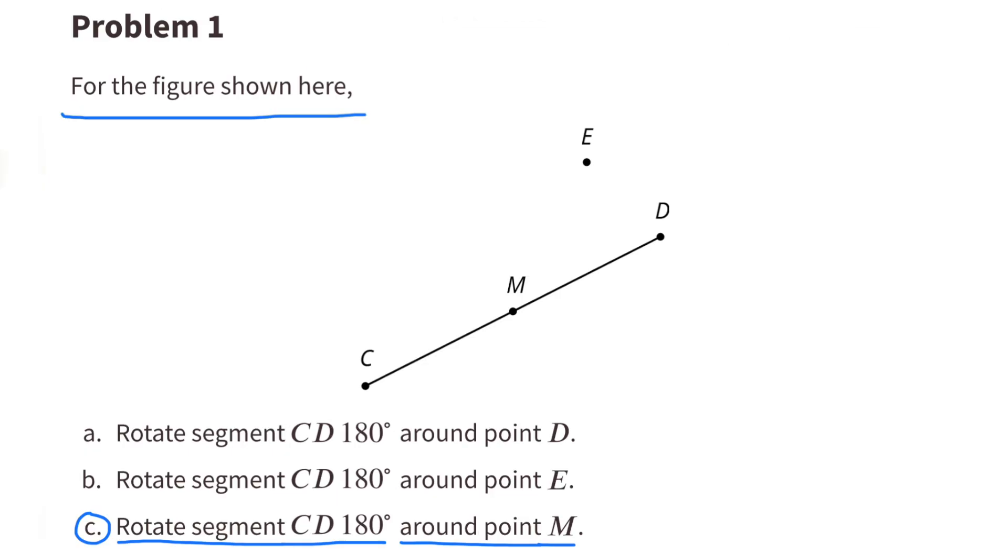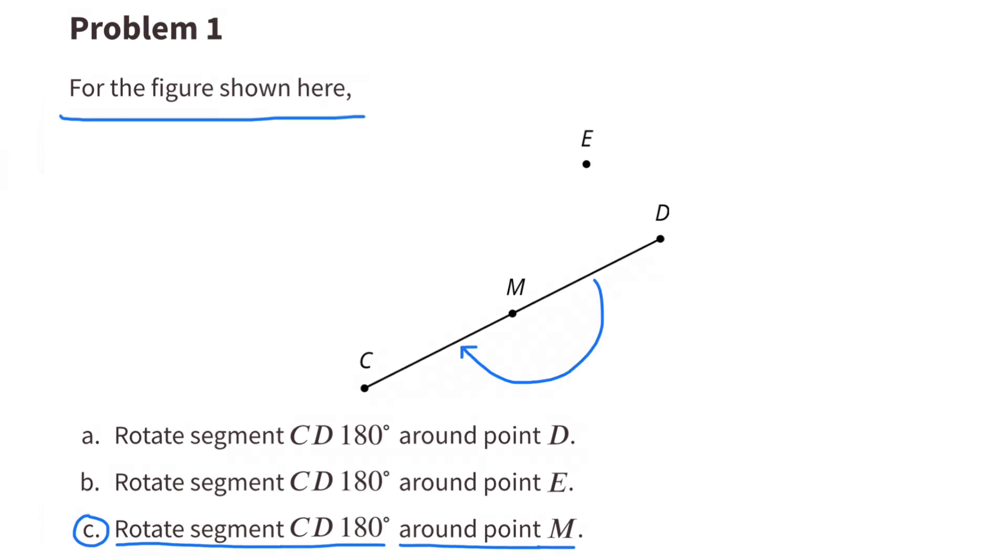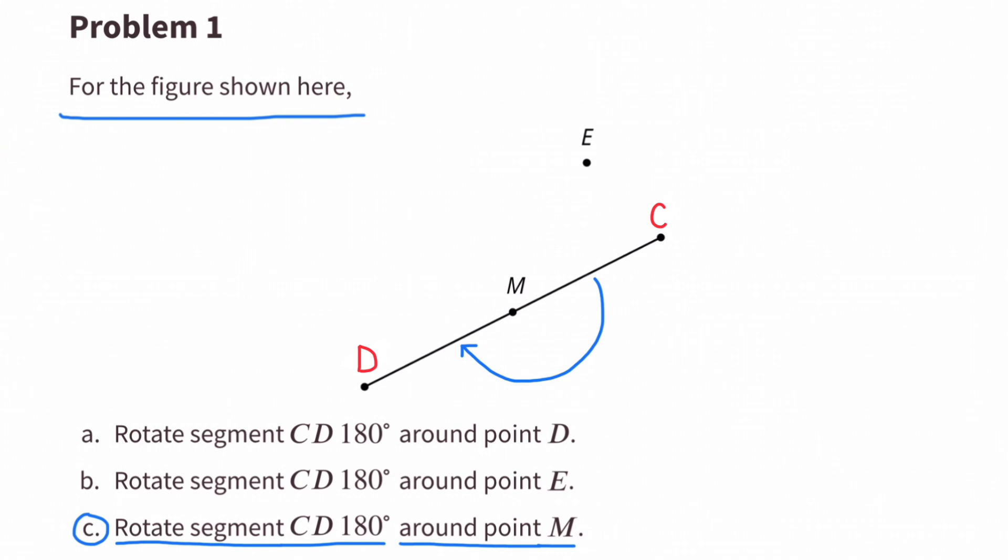Part C: Rotate segment CD 180 degrees around point M. Using point M as the center, rotate segment CD 180 degrees. The segment is identical to segment CD. Only the end points have switched locations.